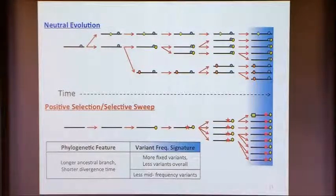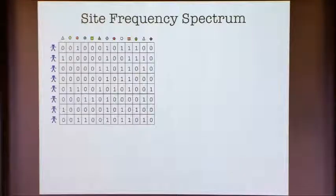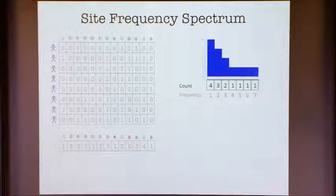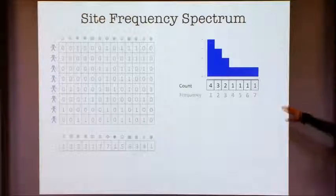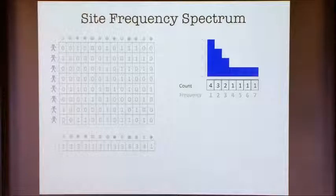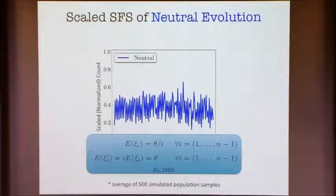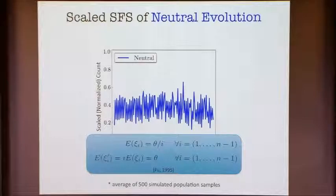Let's start with the allele frequency spectrum. If you take a dataset — rows as individuals, sites as locations, zero representing the ancestral allele and one representing the mutant — and look at the frequencies of different spots and compute a histogram, that's the site frequency spectrum. The nice thing is that if you scale these numbers by the frequencies, the plot looks a lot more uniform. This is a classical result due to Fu, which says that if you take the site frequency spectrum and scale it by the frequency, then in expectation it is the scaled mutation rate theta.